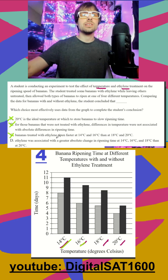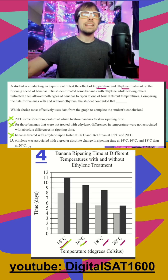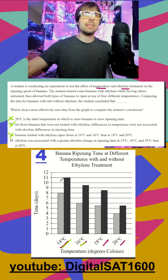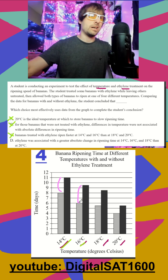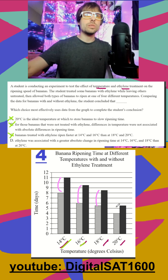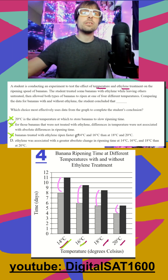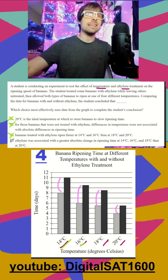And finally, one option says ethylene was associated with a greater change in ripening time at 14, 16, and 18 than at 20. So comparing with ethylene versus without ethylene: we have a little over three, very close to three, maybe three — and then at 20 we only have about one and a half. So ethylene was associated with a greater change in ripening at 14, 16, and 18 than at 20. That is true.